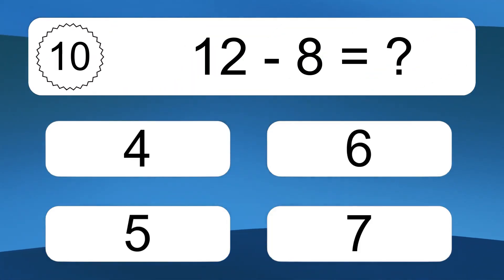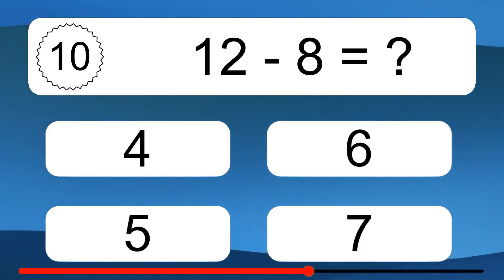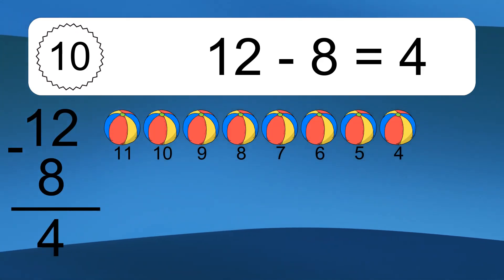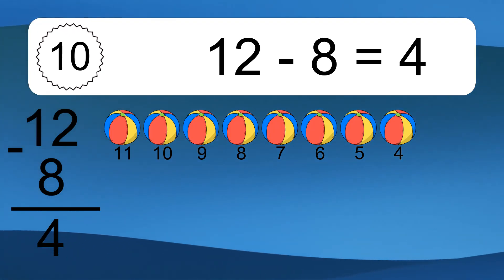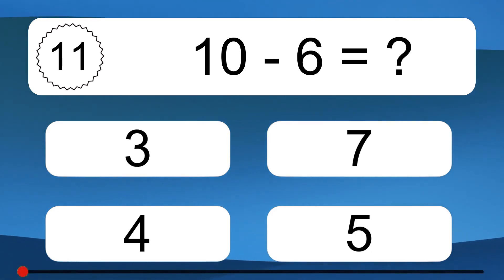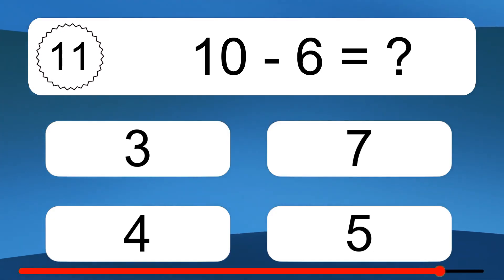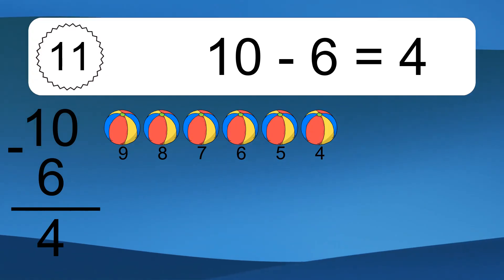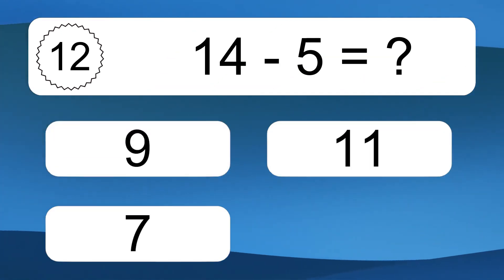12 minus 8 equals what? 12 minus 8 equals 4. Let's count it: 11, 10, 9, 8, 7, 6, 5, 4. 10 minus 6 equals what? 10 minus 6 equals 4. Let's count it: 9, 8, 7, 6, 5, 4.